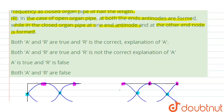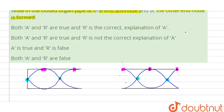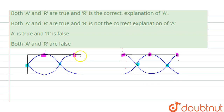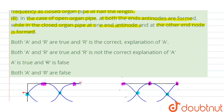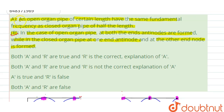These are the nodes. So the reason is: in the case of an open organ pipe, at both ends — these are the two ends — anti-nodes are formed. While in the case of a closed organ pipe, one end is an anti-node (the open end) and the other end (the closed end) is a node. So our reason is correct.